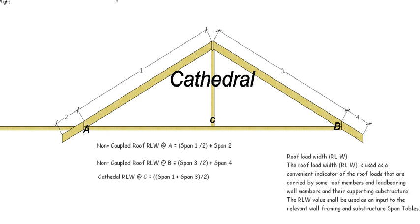If we have a ridge support and we want to know what the RLW is at C, then it's span 1 plus span 3, so this span plus this span, divided by 2 will give us the RLW at C.